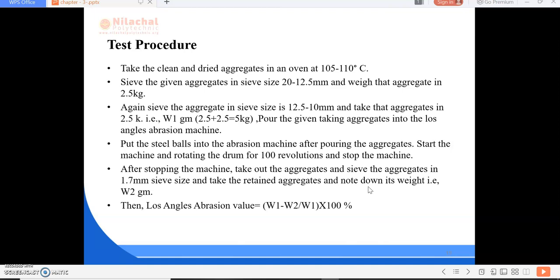Here we are using the abrasive charge or balls made up of cast iron of diameter 4.8 cm and weighing 390 to 455 grams. The machine is rotated at a speed of 30 to 33 rpm rotation per minute for about 500 to 1000 revolutions. Then Los Angeles abrasion value is calculated as W1 minus W2 divided by W1 into 100 percent. The Los Angeles abrasion values for a good aggregate should be less than 30 percent. This is the test procedure for Los Angeles abrasion test.